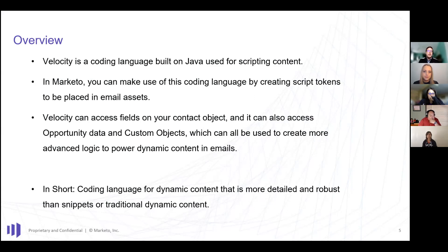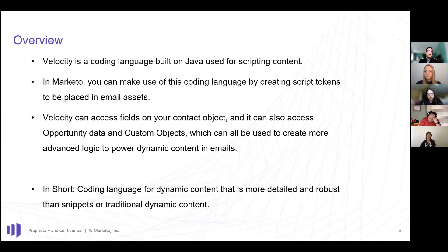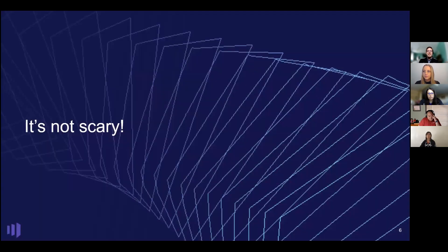So first and foremost — what is Velocity scripting? It's a coding language based off Java, though you don't need to know Java. What really matters is you can use it to create script tokens that you put inside emails. Velocity can read things on your contact object — fields and information about your contacts — and if you're using a CRM, it can read opportunity data and access custom objects if enabled and synced to your Marketo instance.